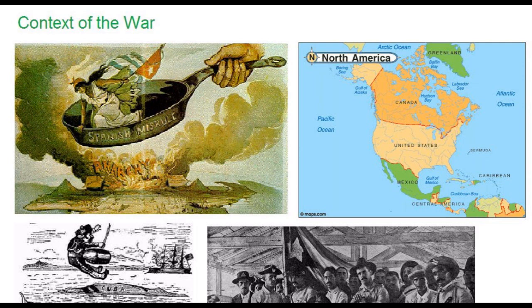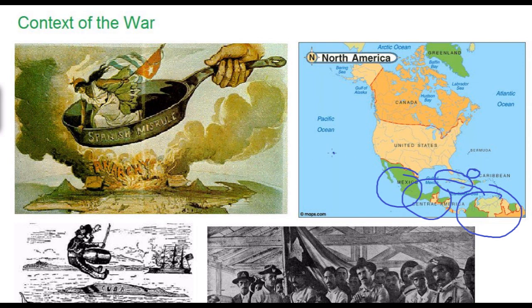The war ultimately has to do with Spain's collapsing empire. Spain had lost control of Mexico and Central and South America during most of the 19th century, and only retained a handful of possessions: the island of Cuba, the island of Puerto Rico, and the Philippines and Guam in the Western Pacific. The United States was very interested in these territories, especially Cuba, being just 90 miles off the coast of Florida.